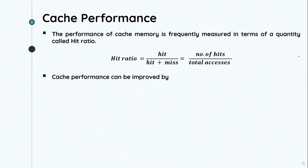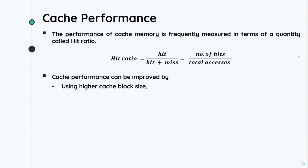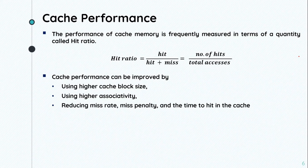Cache performance can be improved by using higher cache block size, using higher associativity, and reducing the miss rate, miss penalty, and the time to hit in the cache.